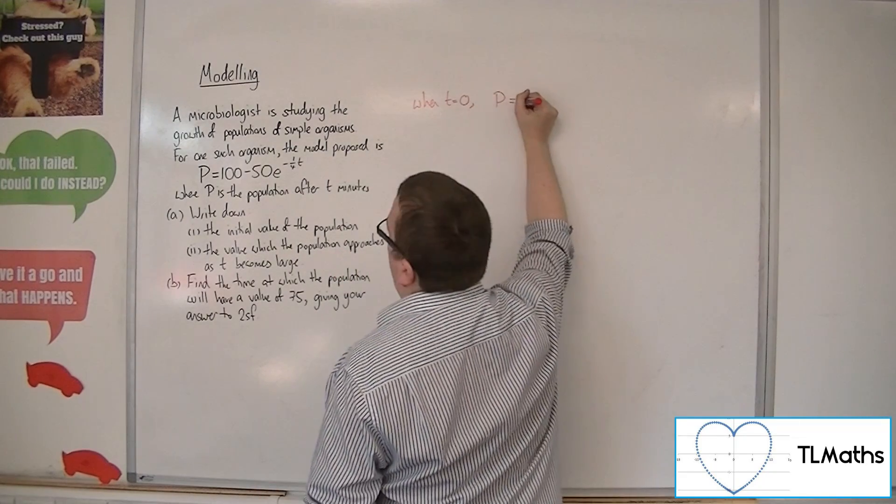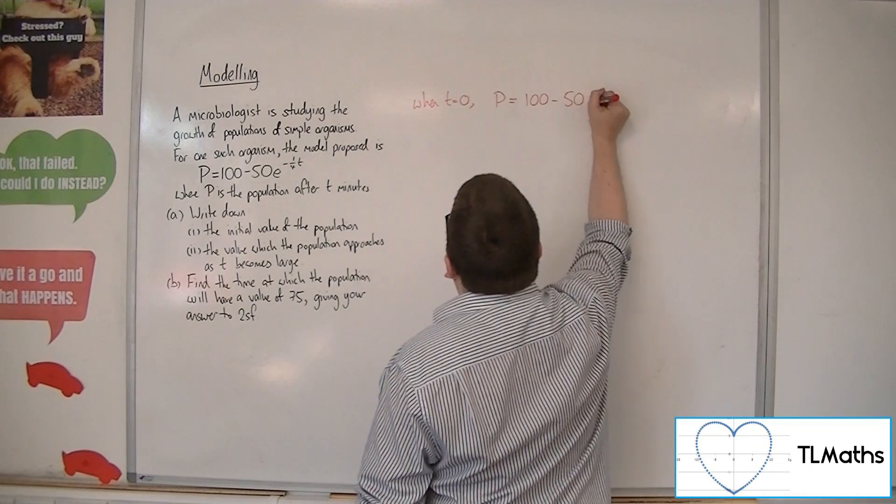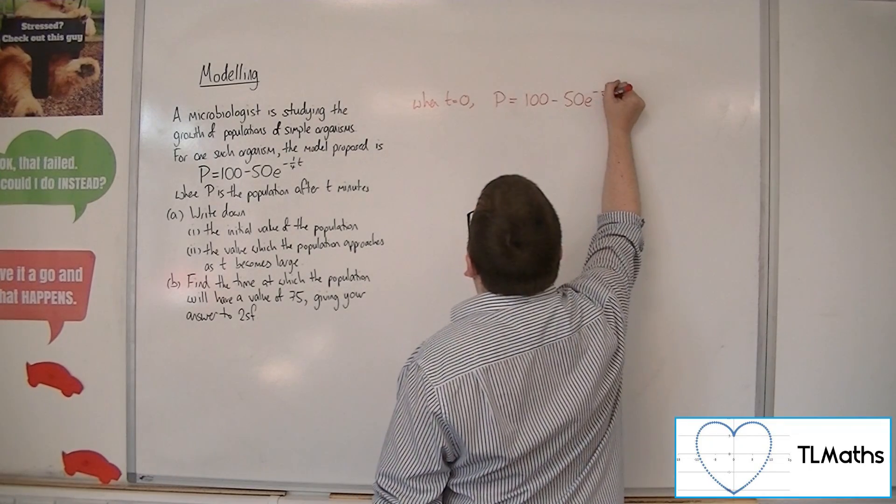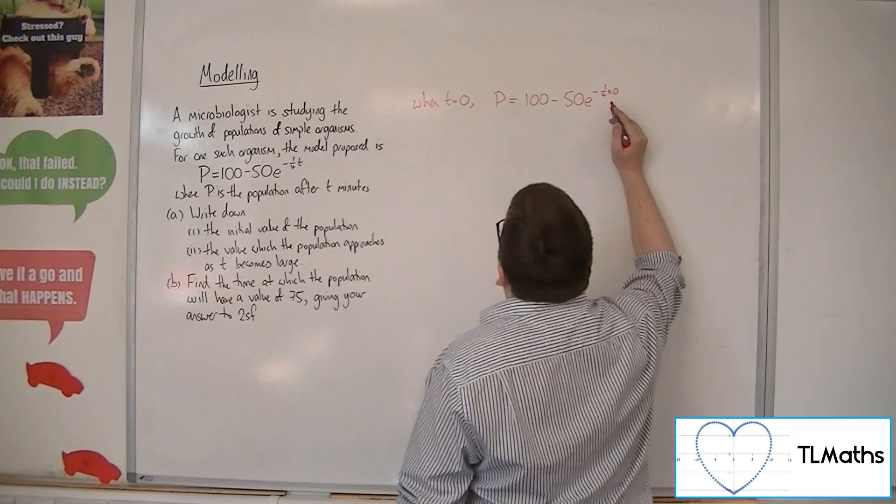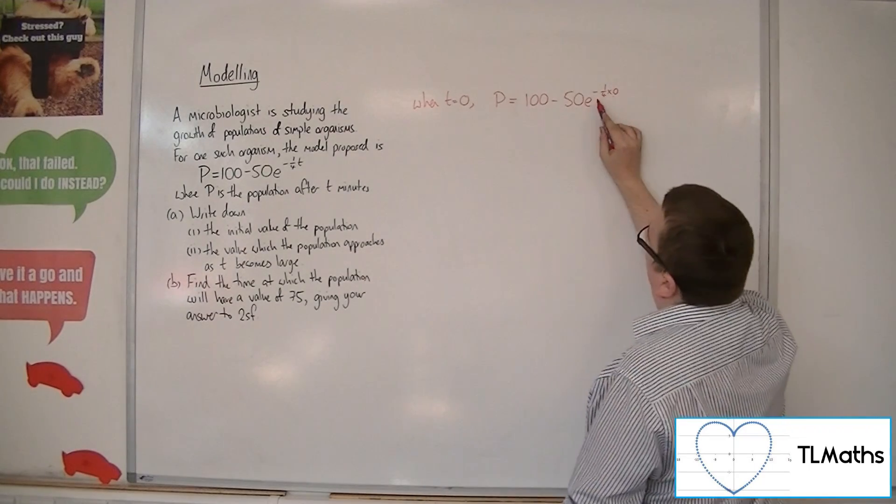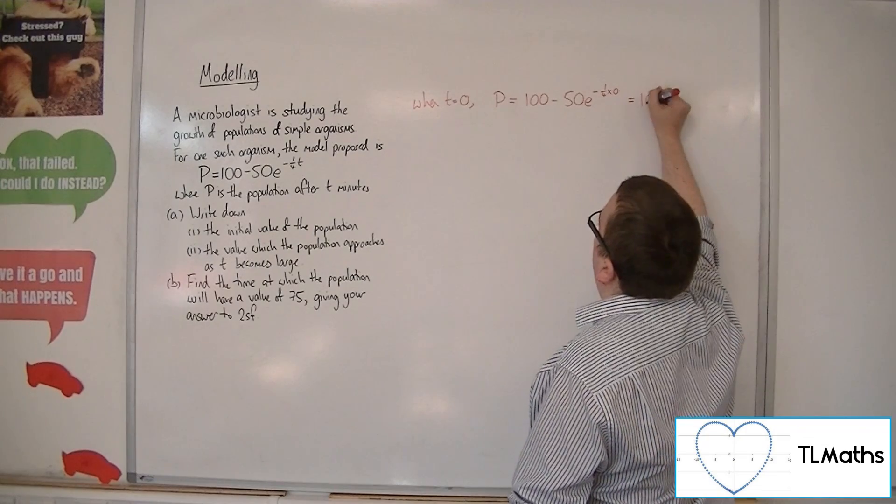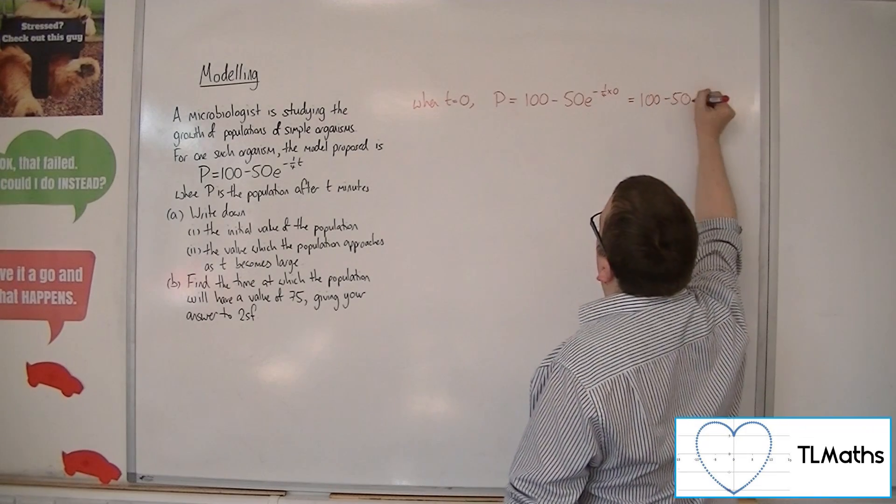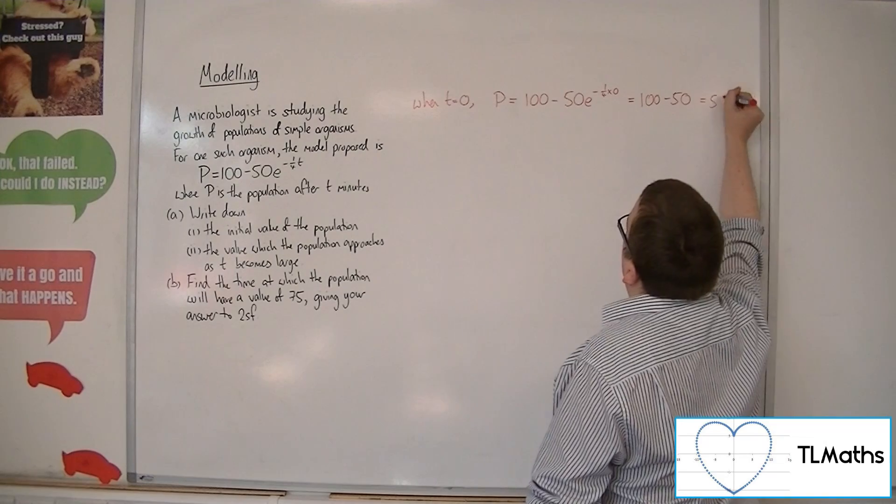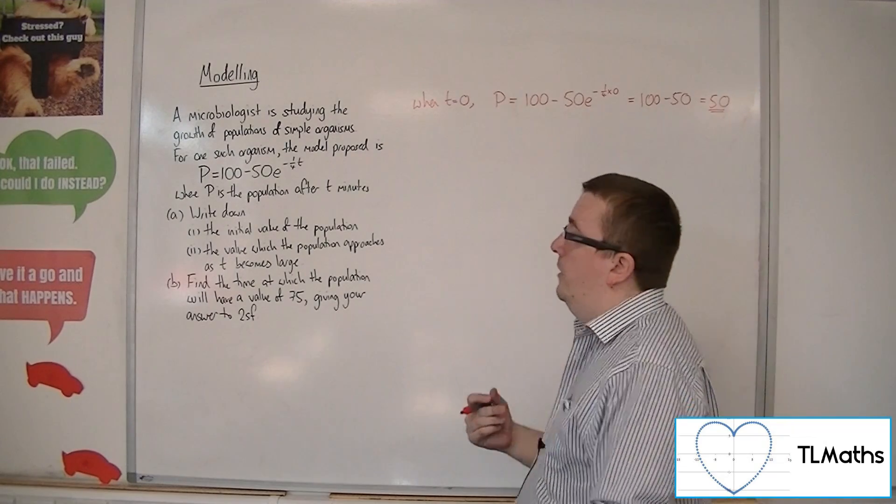So p equals 100 minus 50 e to the minus a quarter times 0. Now minus a quarter times 0 is just 0. e to the 0 is just 1. So you have 100 take away 50 lots of 1. So the initial population must have been 50.